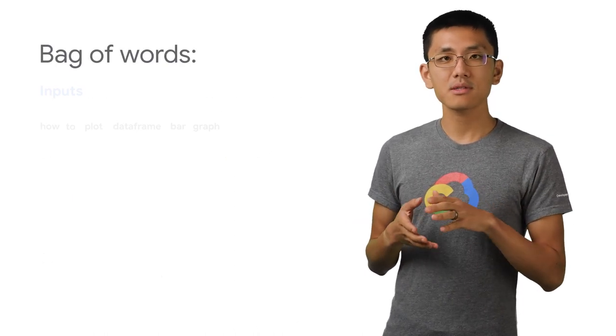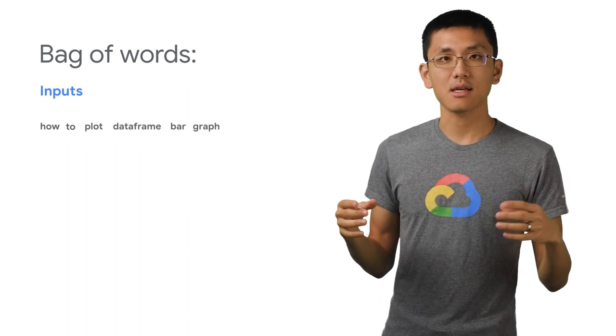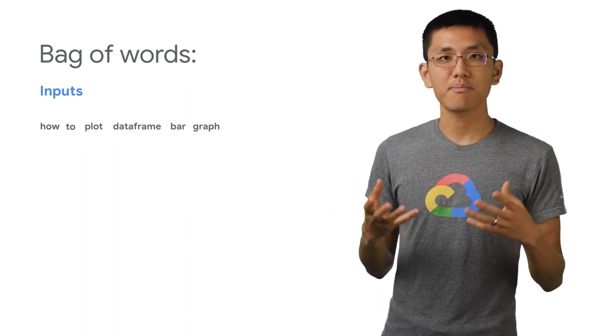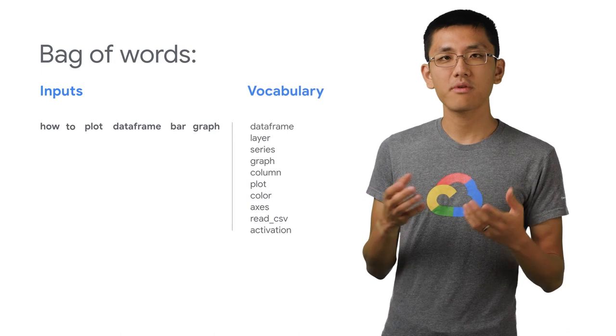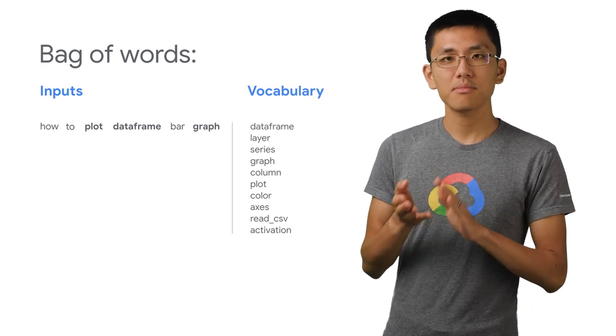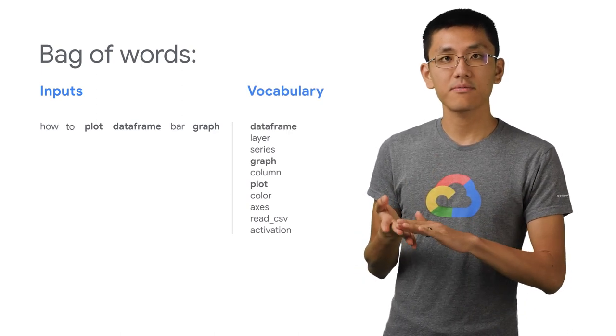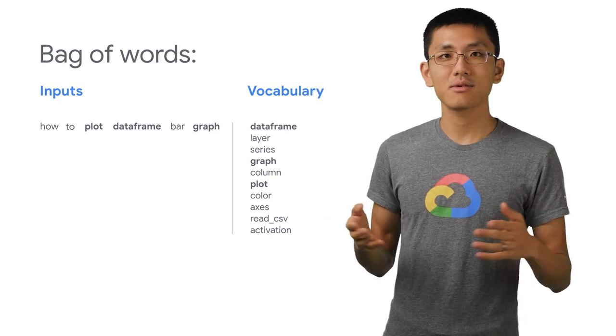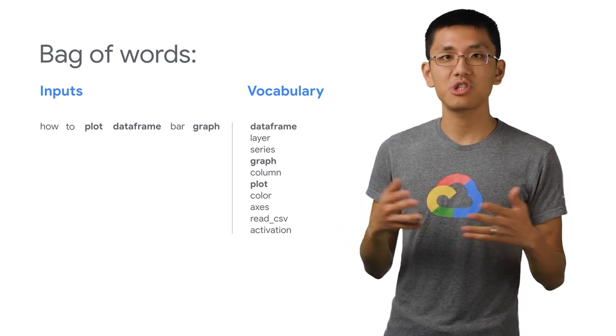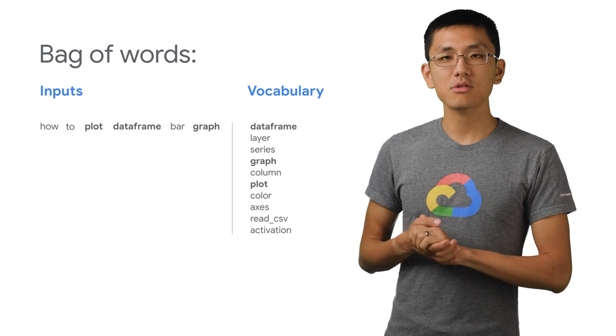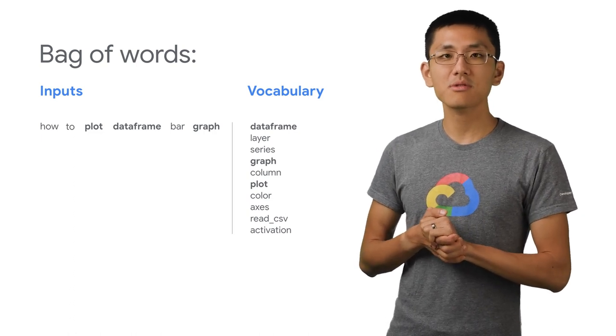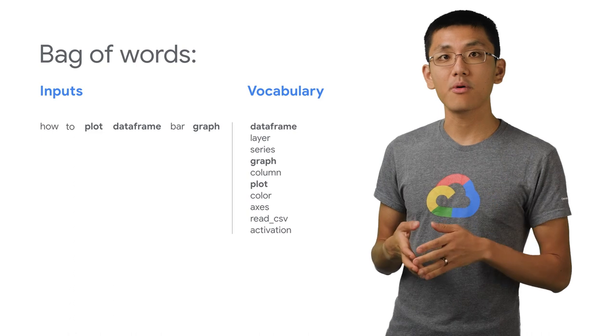Well, perhaps if we looked at a sentence like, how to plot data frame bar graph, we would recognize just the words plot, data frame, and graph. The rest of the sentence would look like a foreign language, just gibberish. Knowing only those three words in the sentence, though, we might still be able to get some sense of what it's about.